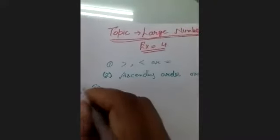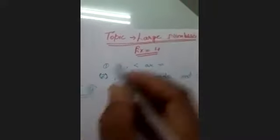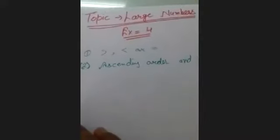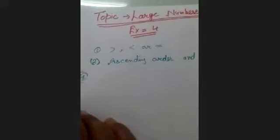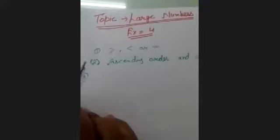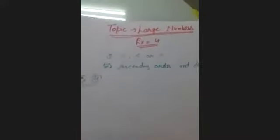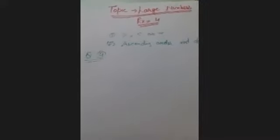Now question number four of exercise four. I'm starting from the fourth question. Your fourth question is: circle the largest number. Question number four is to circle the largest number.